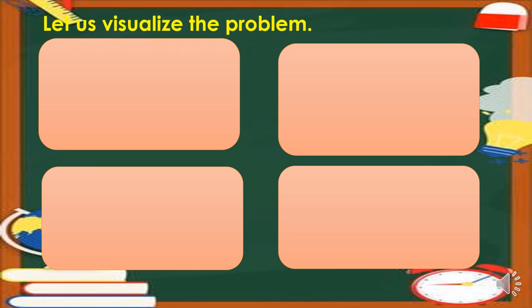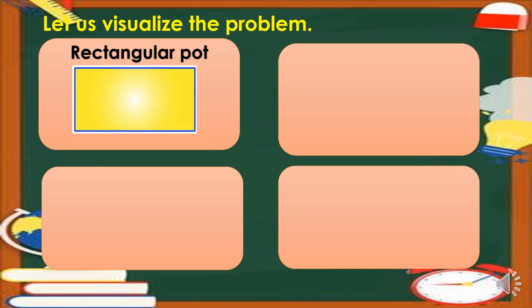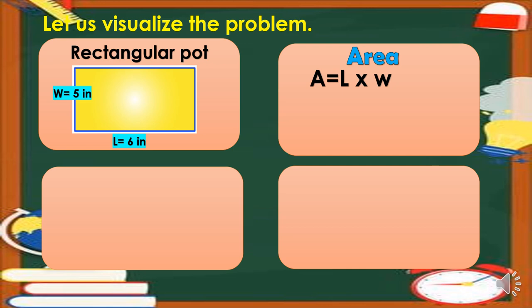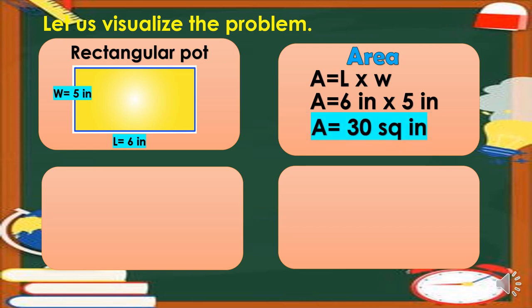Let us visualize the problem. For the rectangular pot, we have this image. This is a two-dimensional view, so we have to find the area of this rectangular pot. We will be needing the width, which is 5 inches, and the length, which is 6 inches. The formula in finding the area is A equals length times width. Substituting: length is 6 inches times 5 inches, which gives us 30 square inches.